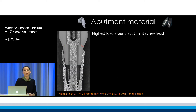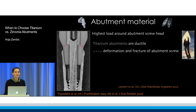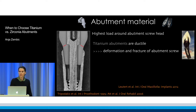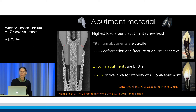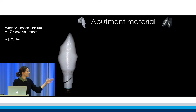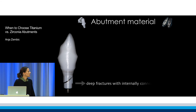As we know from a lot of in vitro studies, the highest load is around the abutment screw head, and this influences the result. Titanium as a metal is a ductile material and we have deformation and fracture of the abutment screw, while zirconia is a brittle ceramic material and the critical area here is around the screw head in terms of stability. So we might end up in a fracture, like you can see here in this clinical situation.